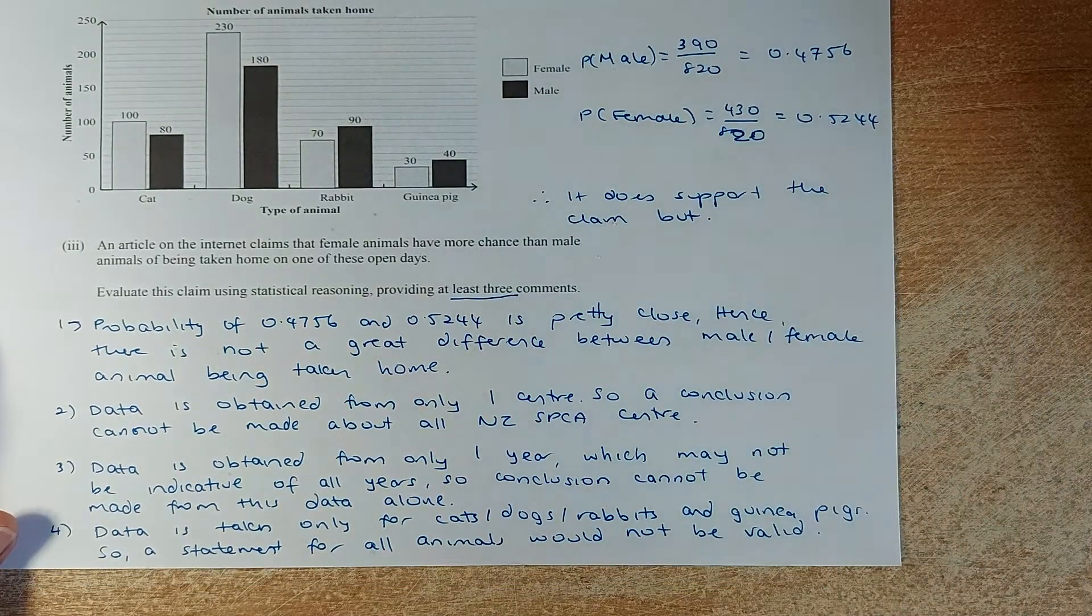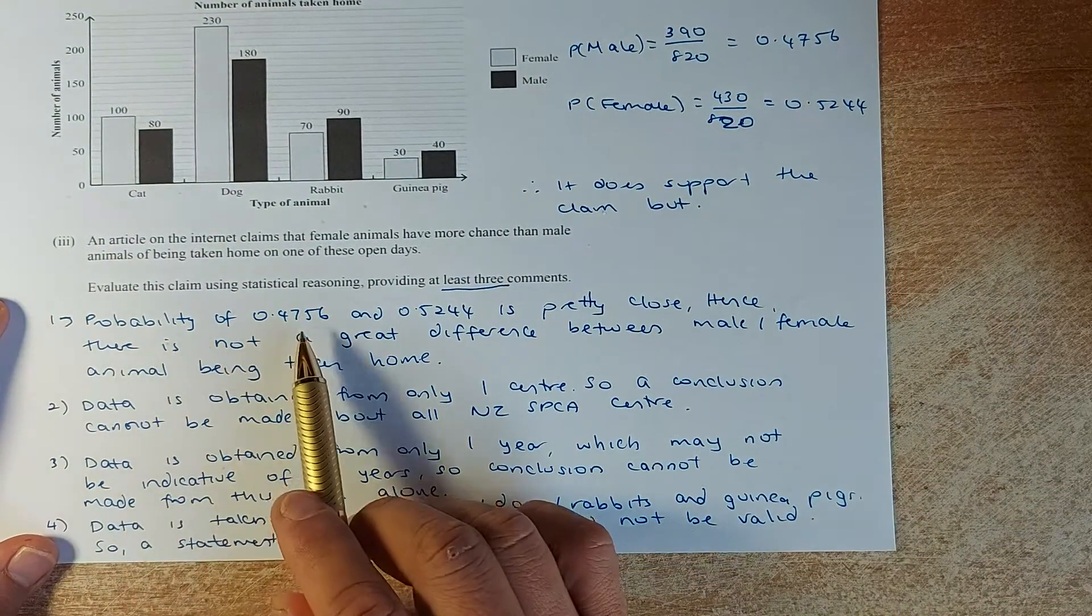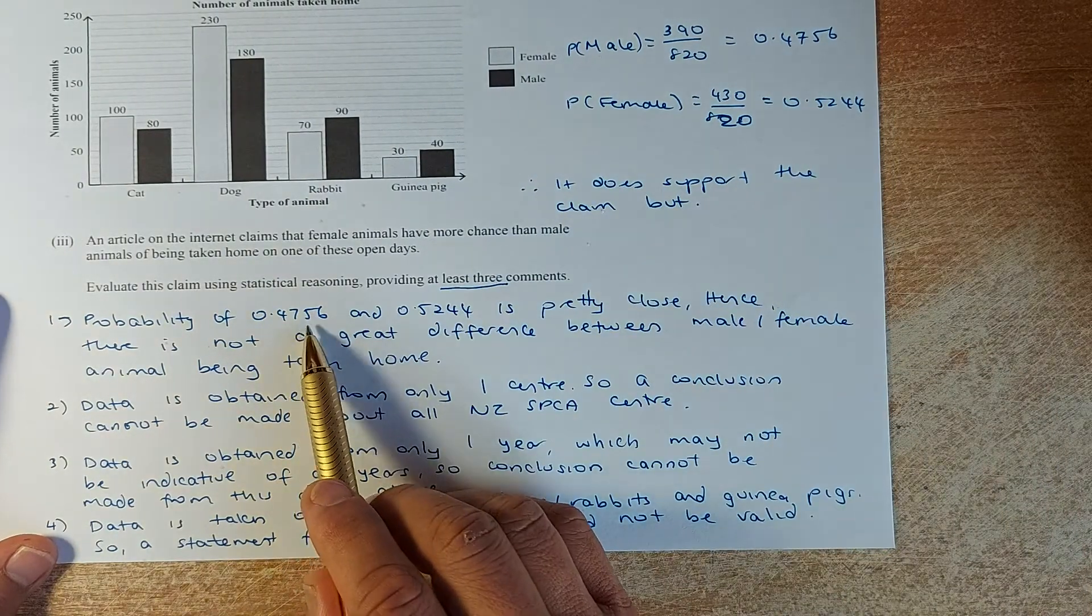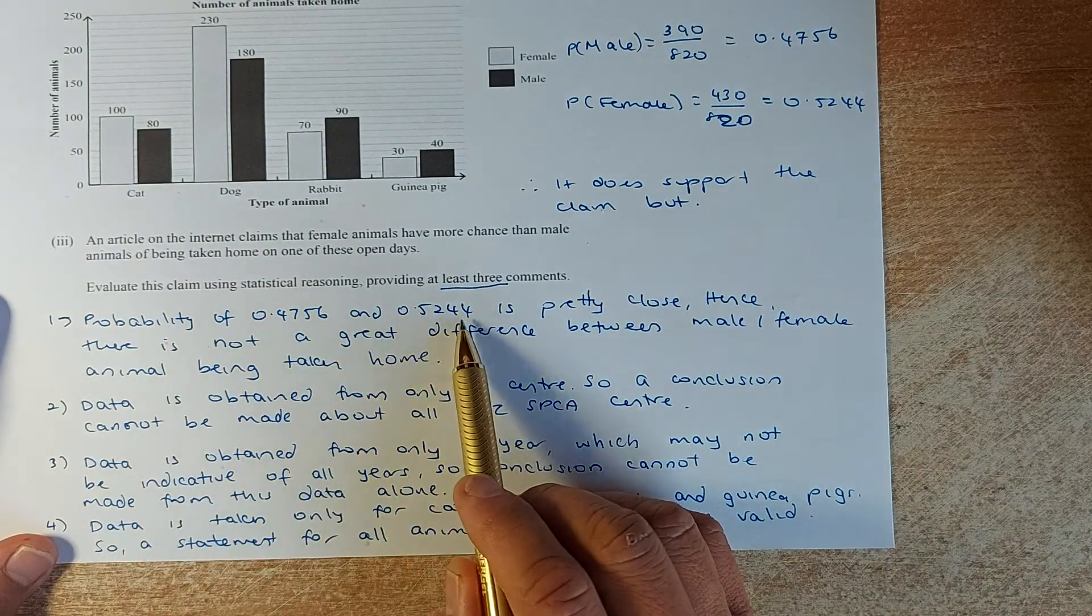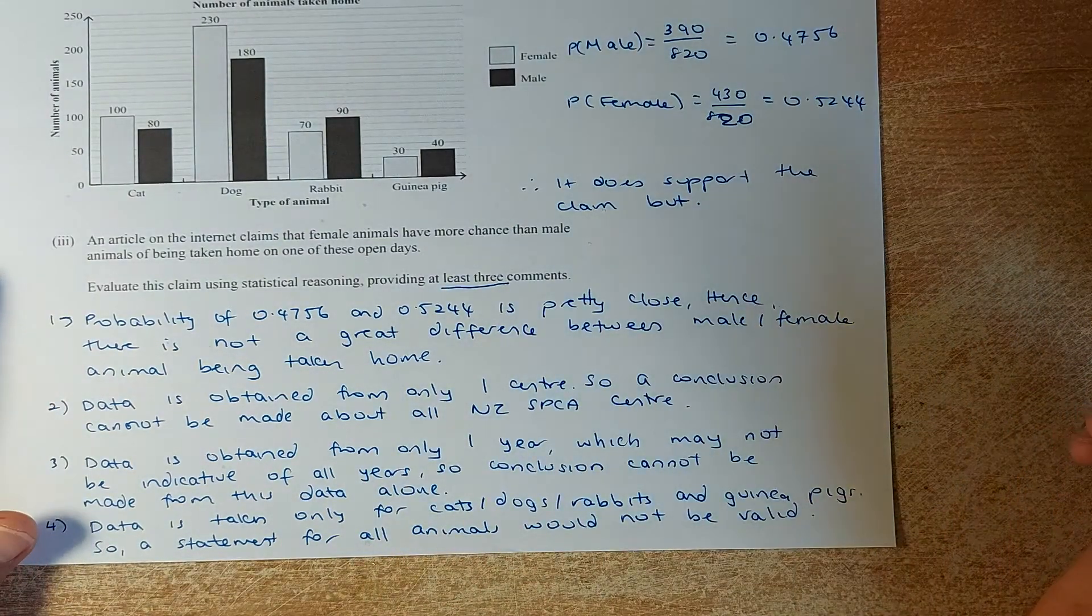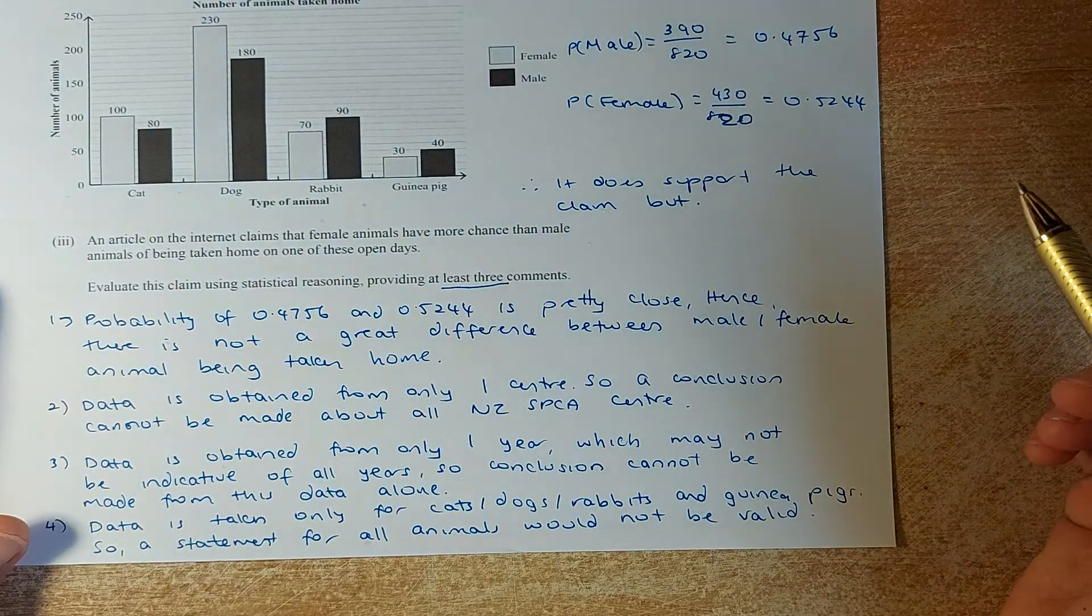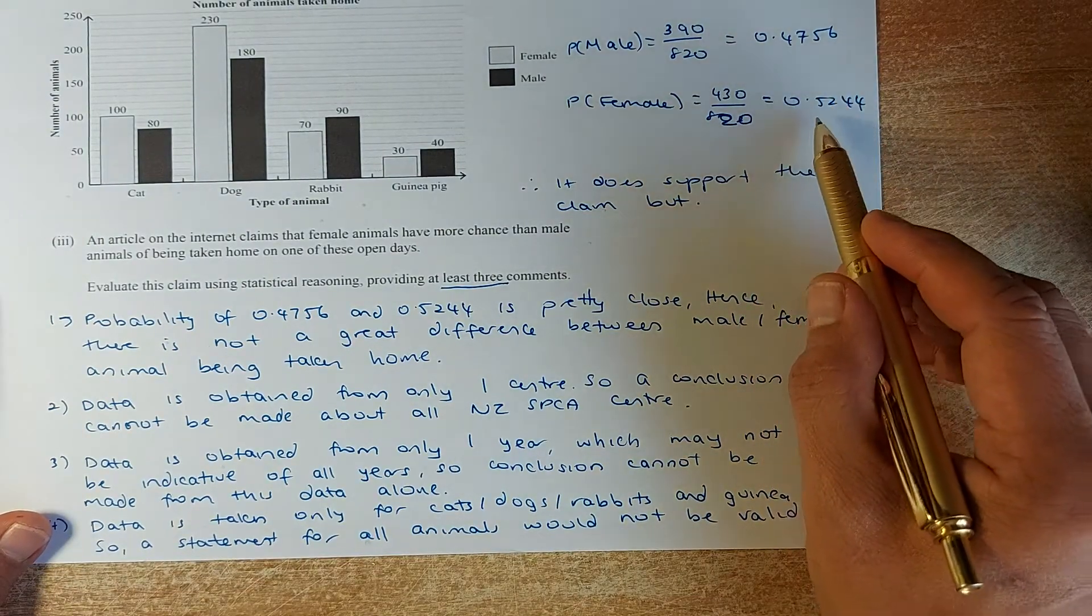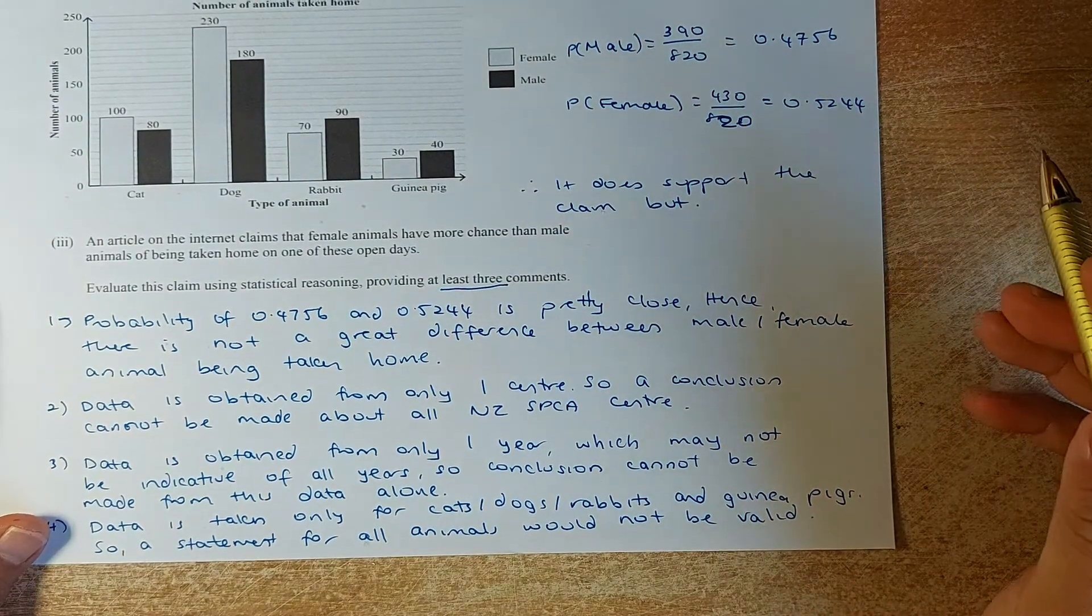However, you need to answer that tactically. You must say the probability of 0.4756 and 0.5244, they are pretty close. There's not a great difference between the male and female being taken home. Comparing between roughly 48% against 52%, they are pretty close.